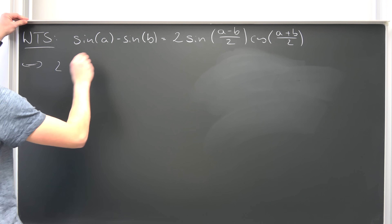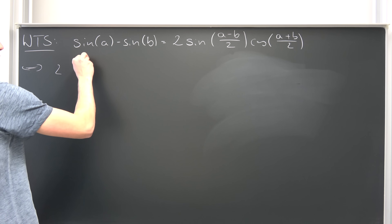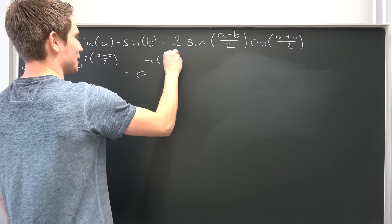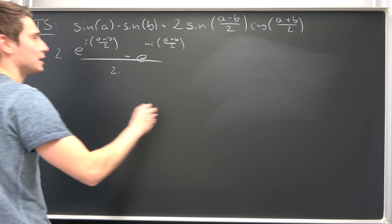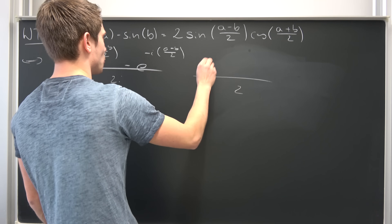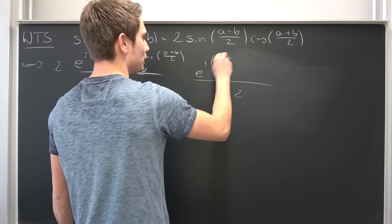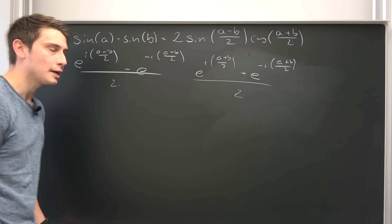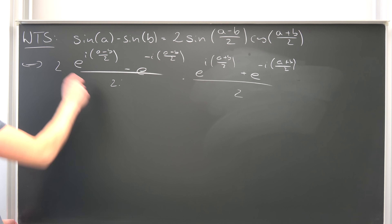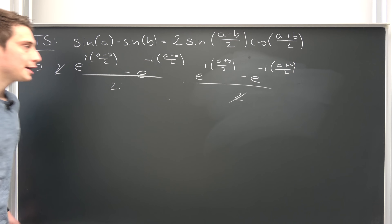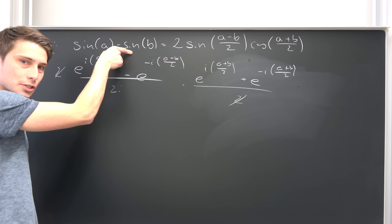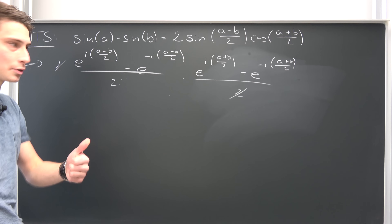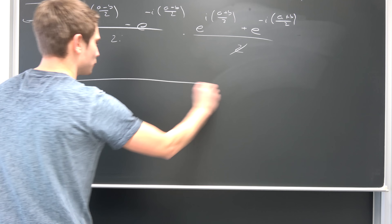Now the math is going to start. We are going to have 2 times — for the sine part — e to the i times (a minus b) over 2, minus e to the negative i times (a minus b) over 2, over 2 times i. And then we have the cosine part, which is something over 2: e to the i times (a plus b) over 2, plus e to the negative i times (a plus b) over 2. You might notice this is multiplicative, so we can cancel one of the twos, giving a common factor of 2i in the denominator.